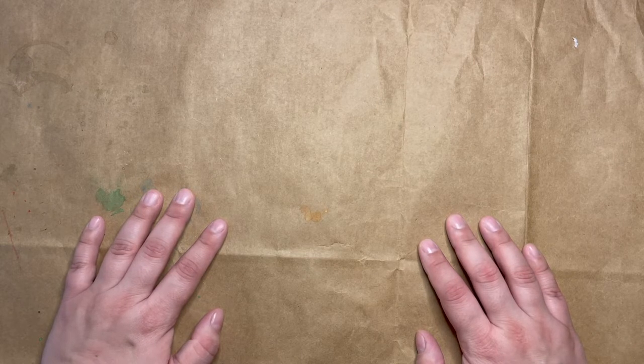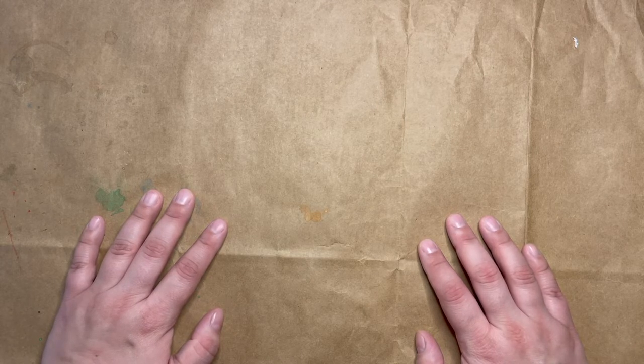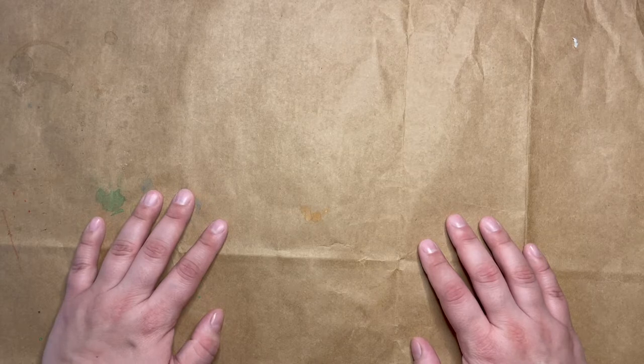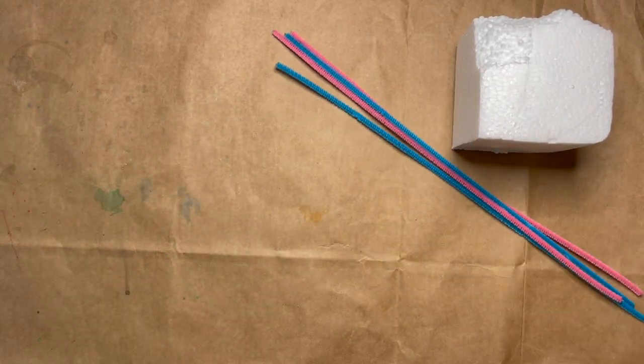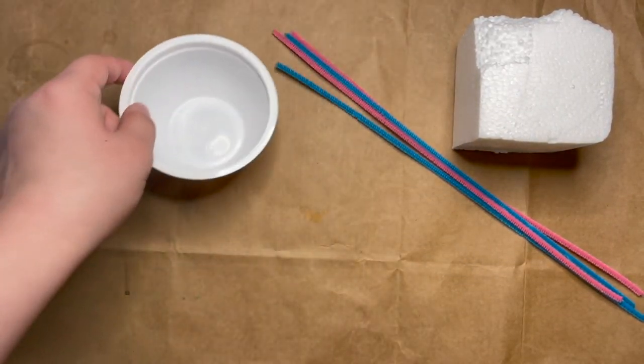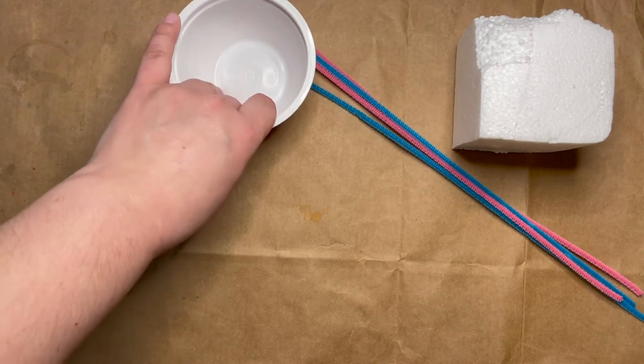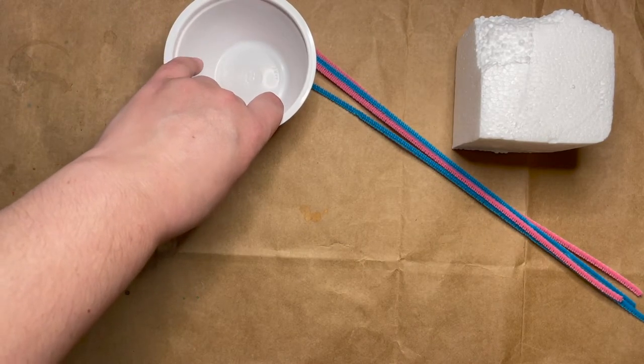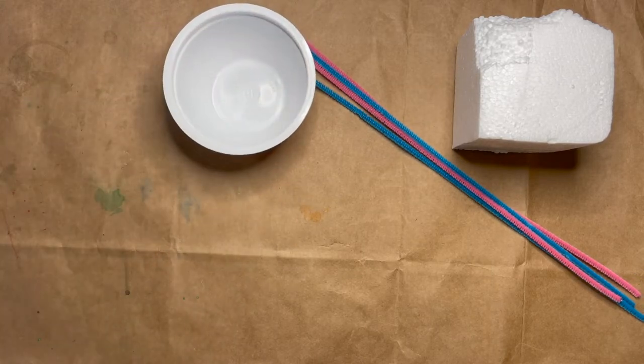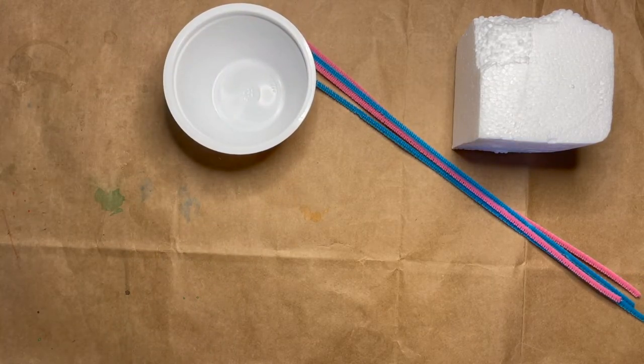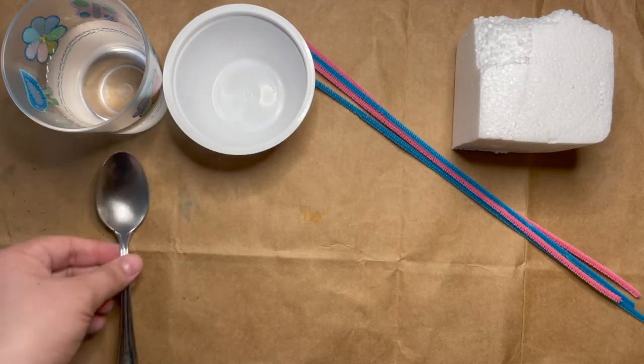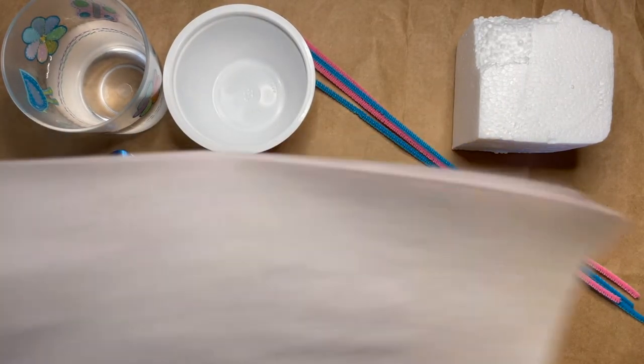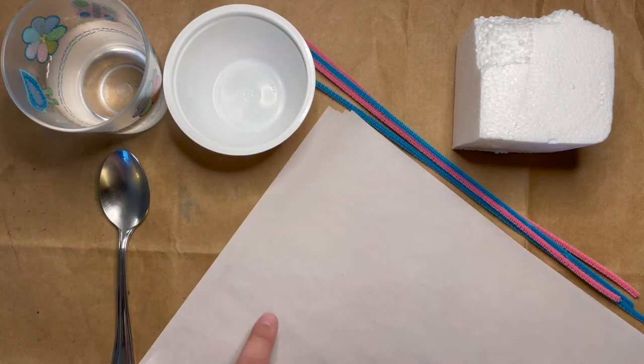Today's project is our paper mache pipe cleaner sculptures. For this project, you will need the foam from your kit, some of your pipe cleaners, the little container that came in my kit or a larger bowl for making your paper mache paste, water from home, a spoon from home, and your newsprint paper.